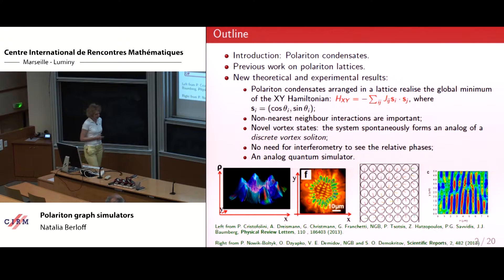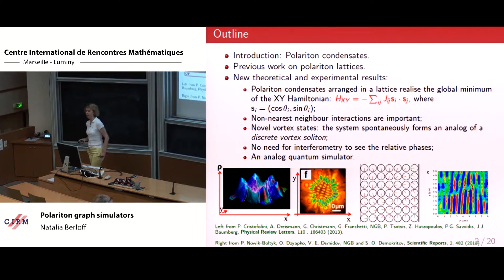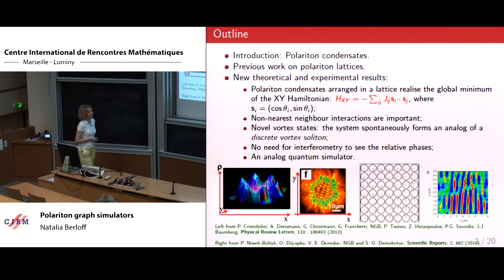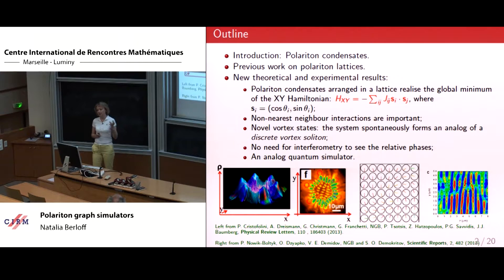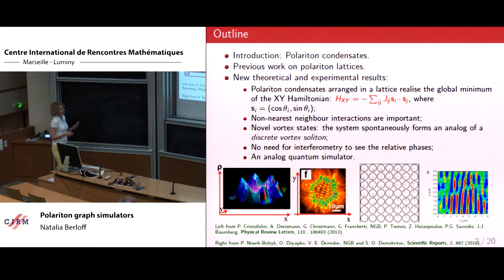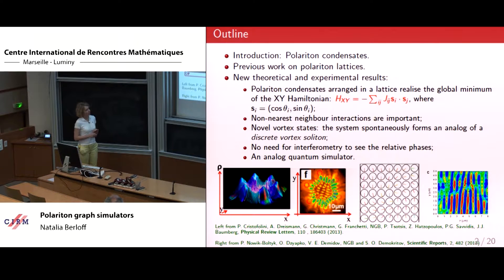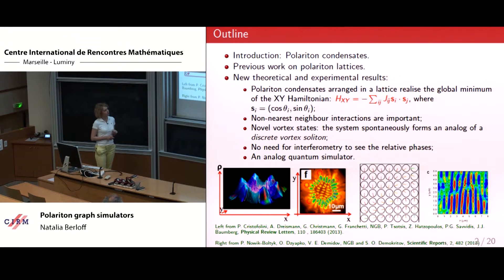This Hamiltonian lies at the core of many systems — from quantum liquids to the BKT transition to high-temperature superconductors to magnetic systems. When I talk about polariton condensates arranged in a lattice, the first picture to have in mind is that we can pump and create condensates at localized positions in two-dimensional space.